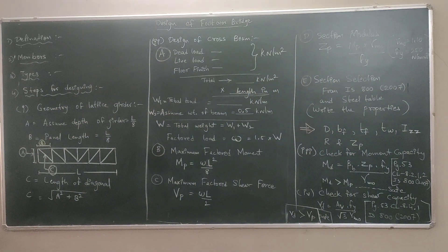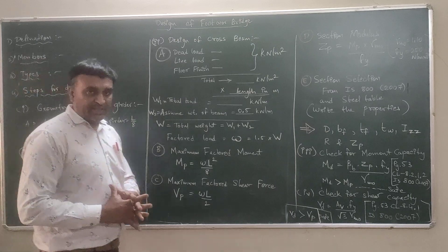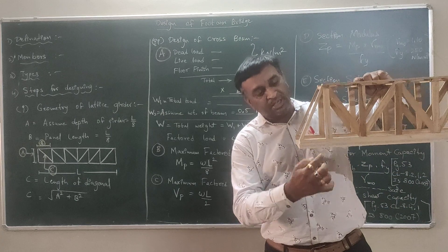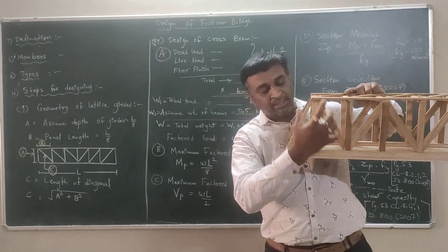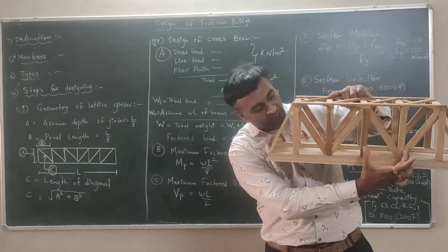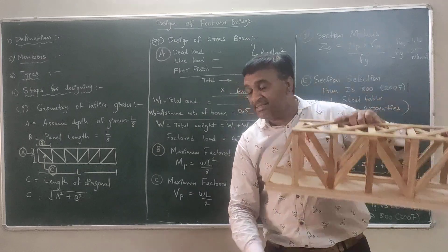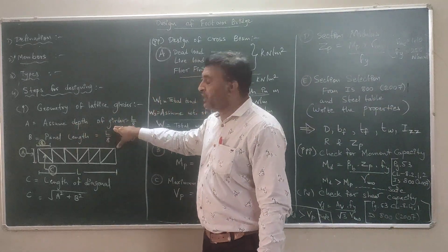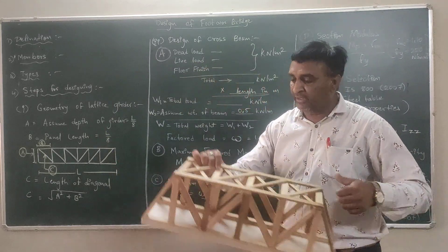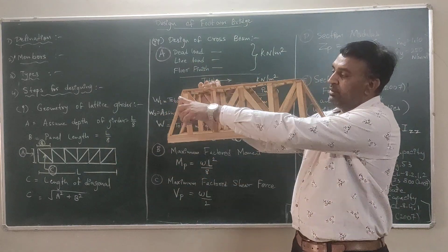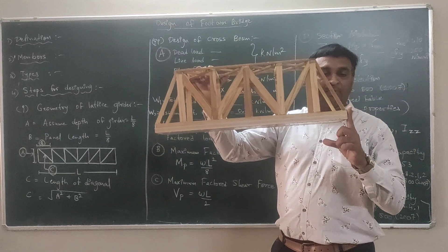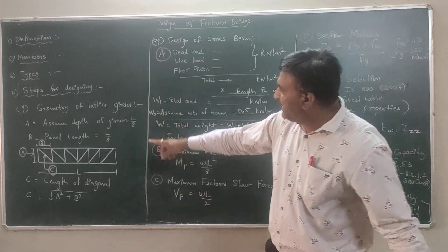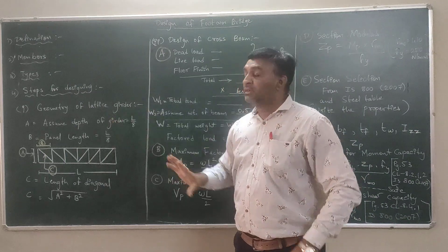The first step is the geometry of the lattice girder. For the geometry, we determine how much height is required and the span between supports. The depth of the girder is calculated as: span divided by 8. We generally divide the span into 8 equal parts, so span/8 gives you the depth of the girder.